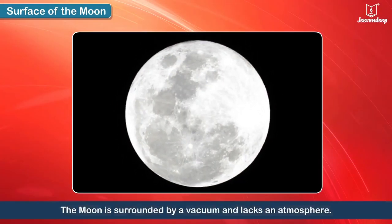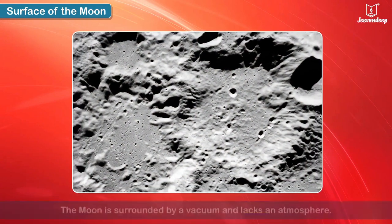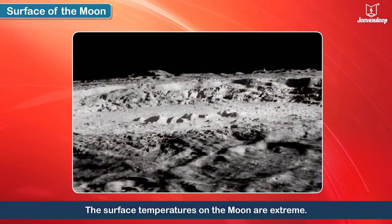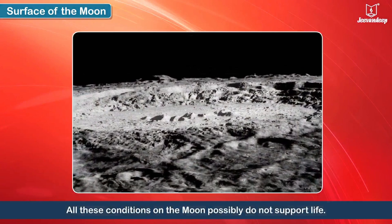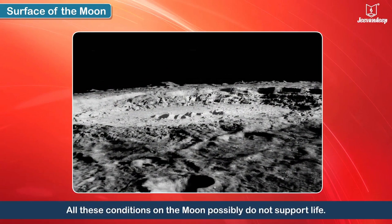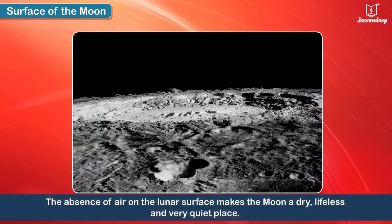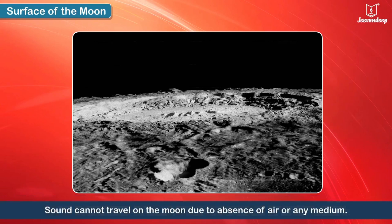The Moon is surrounded by a vacuum and lacks an atmosphere. It has no liquid water on its surface, and the surface temperatures on the Moon are extreme. All these conditions possibly do not support life. The absence of air on the lunar surface makes the Moon a dry, lifeless and very quiet place, as sound cannot travel in the absence of air or any medium.